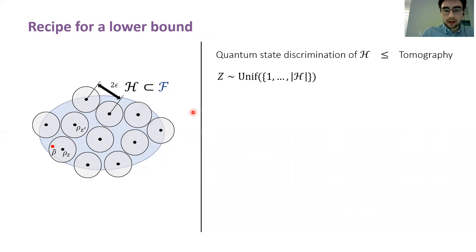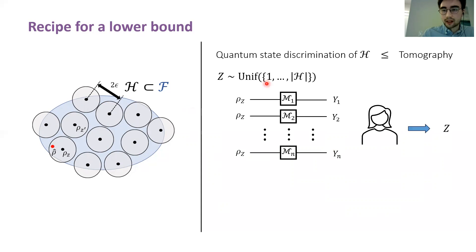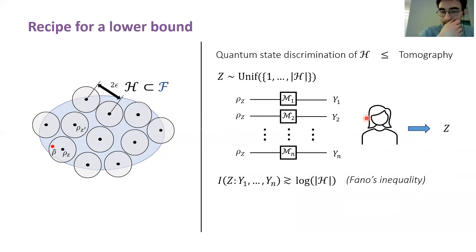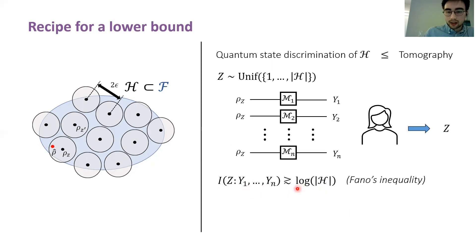If you pick a state in the packing uniformly at random, prepare n copies of that state, then the learner Alice can decode what that state was using the measurement outcomes. This implies by Fano's inequality that the mutual information between the random variable representing the choice of state and the outcomes obtained must be at least log of the cardinality of the packing. Roughly speaking, the shared information between the outcomes and the choice of state must be at least a constant fraction of the information contained in the random choice of state.